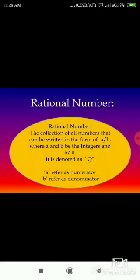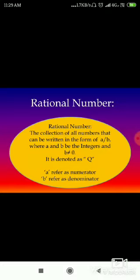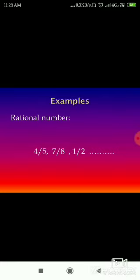So what is a rational number? A rational number is a collection of all numbers — whole numbers, integers, and natural numbers. It can be any number that can be written in the form of a/b, where a and b are integers and b does not equal zero. It is denoted as Q. Here, a refers to the numerator and b refers to the denominator. Let's see some examples of rational numbers: 4/5, 7/8, 1/2, and so on.